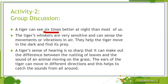A tiger's sense of hearing is so sharp that it can make out the difference between the rustling of leaves and the sound of an animal moving on the grass. The ears of the tiger can move in different directions, and this helps to catch sounds from all around. Tigers have a very sharp sense of hearing because they are able to hear in the range of 0.2 kHz to 65 kHz. And tigers live in the dense forest, so they need strong hearing power to detect and catch their prey.